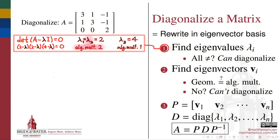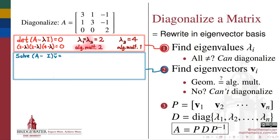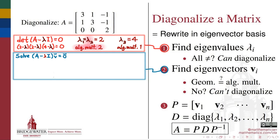Now that we know the eigenvalues of this matrix, we may find the eigenvectors. We solve the equation (A minus lambda times the identity) times the vector v equals 0, seeking one of the infinitely many solutions this equation will have for each of the eigenvalues.